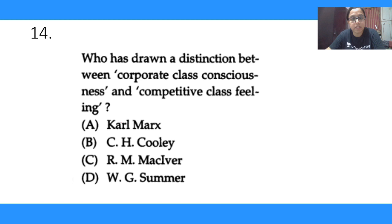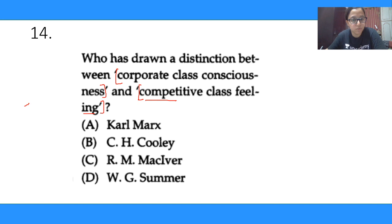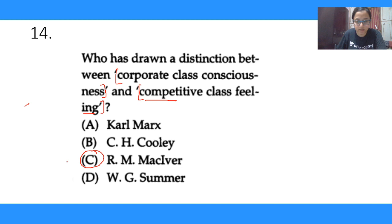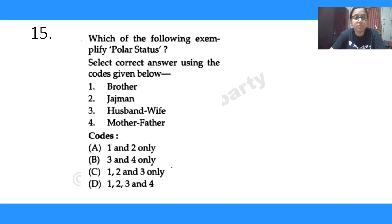Question 14: who has drawn a distinction between 'corporate class consciousness' and 'competitive class feeling'? Options are Karl Marx, C.H. Cooley, R.M. MacIver, and W.G. Sumner. It is not Karl Marx. The correct answer is R.M. MacIver — these are MacIver's two categories. Please add this to your notes.